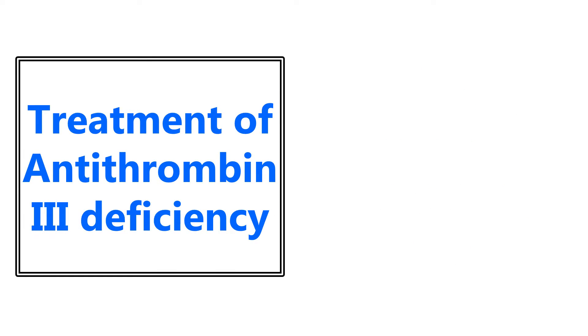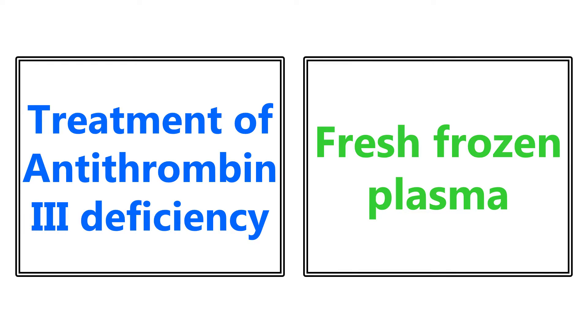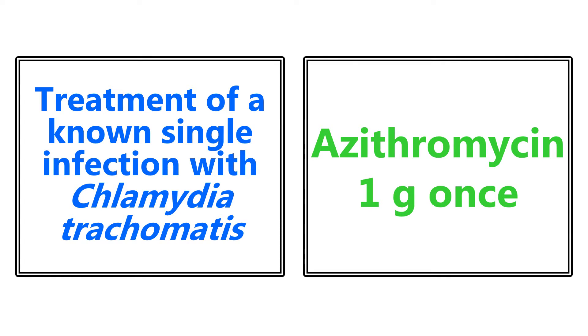The next one is treatment of antithrombin 3 deficiency. This is going to be fresh frozen plasma. Moving on from that, treatment of a known single infection with chlamydia trachomatis — be sure to read these questions carefully. A known single infection means we do not need to cover for gonorrhea. If we're not sure, we typically cover for both. But a known single infection of chlamydia, we're going to treat with azithromycin 1 gram once.